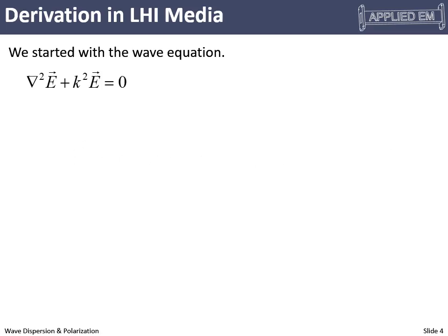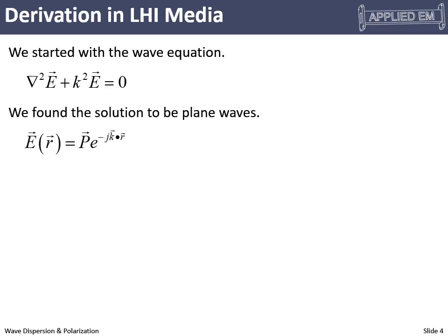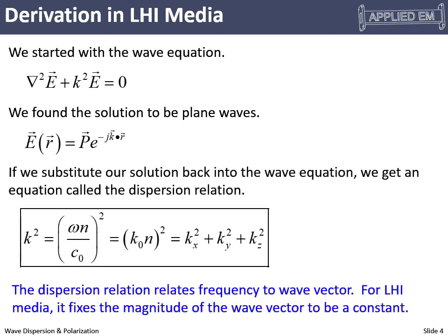Dispersion relation. We started with the wave equation and derived a plane wave solution. Skipping a long derivation, if we take this solution, plug it back into our wave equation and turn our algebra crank, what comes out is the dispersion relation — a rule that our wave vector has to follow. Fundamentally, the dispersion relation relates frequency to wave vector. Depending on the direction of the wave, the magnitude of the wave vector could change, setting limits on what the different components could be.